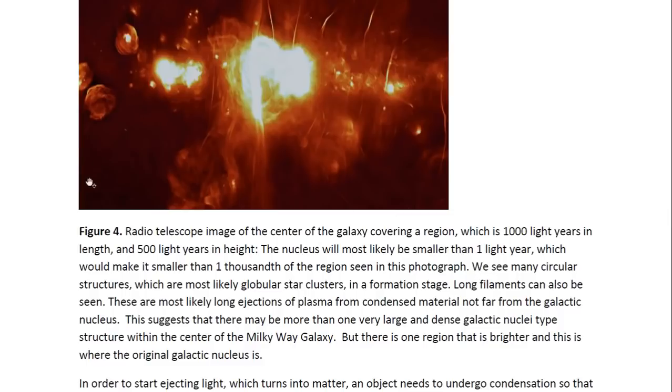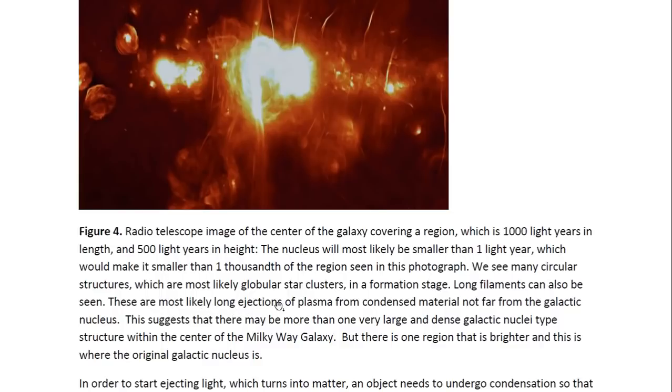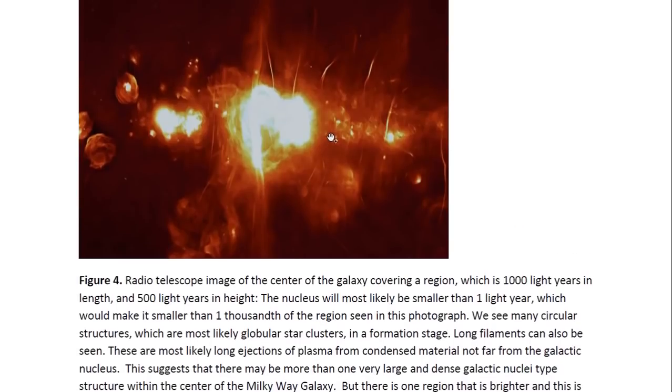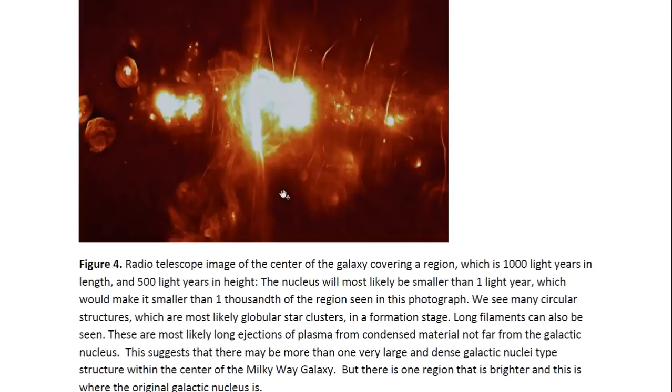We see many circular structures, which are almost likely globular star clusters in a formation stage. We see long filaments, and these are puzzling at first. But these would have to be long ejections of plasma from condensed material not far from the galactic nucleus. This suggests that there may be more than one very large and dense galactic nuclei-type structure within the center of the Milky Way galaxy. These probably originate from large objects that have dense cores that are able to eject material like the galactic nucleus can.